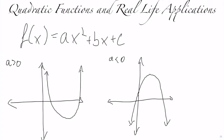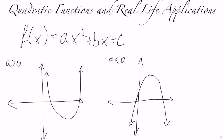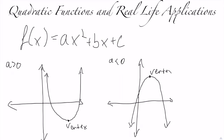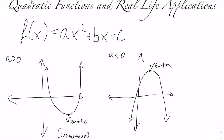As previously mentioned, a could either be positive or negative. And in both cases, the point where the function turns — as seen — is called the vertex. Where a is positive, the vertex is the minimum, or where the y-value is the very least. But where a is negative, the vertex is the maximum point.